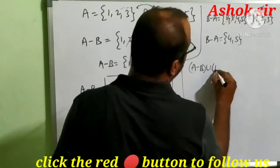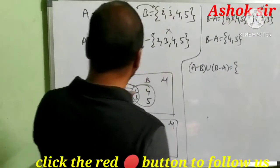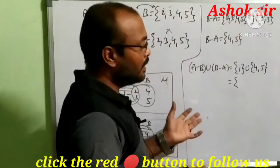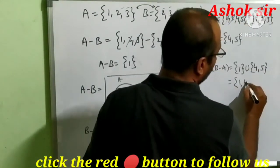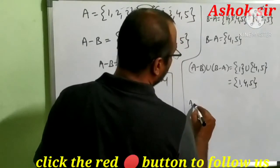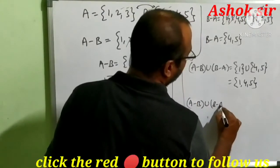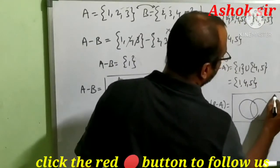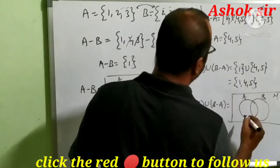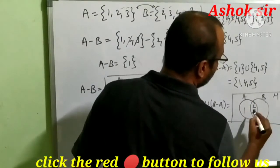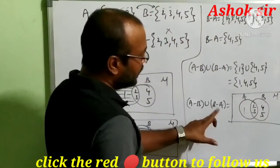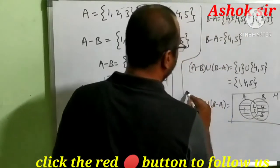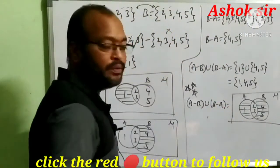Sometimes they may ask for A minus B union B minus A. A minus B = {1} and B minus A = {4, 5}, so A minus B union B minus A = {1, 4, 5}. In the Venn diagram we shade both exclusive parts: A minus B is the left exclusive part, and B minus A is the right exclusive part — both shaded, excluding the common middle area. This is a very important question in the annual exam.